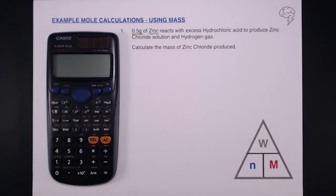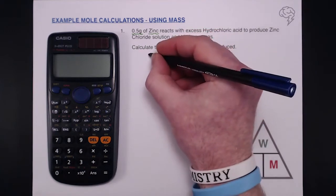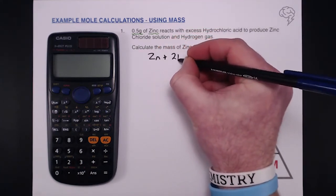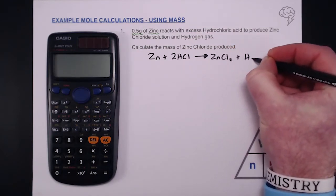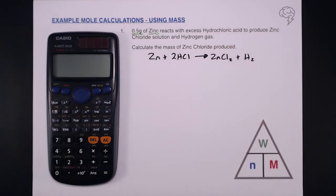The first thing we need to do if we're not given one is write a balanced equation. We've got Zn plus 2HCl gives ZnCl2 and H2. The formulas are massively important. If you don't get the formula right then you can't balance the equation. So that's our balanced equation.